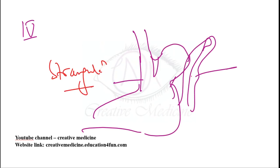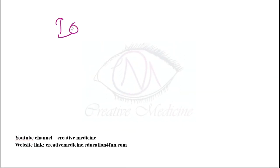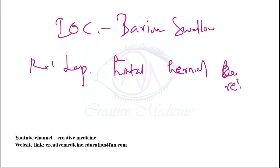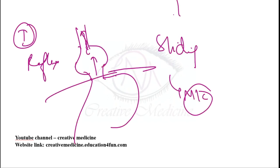Investigation of choice for diagnosis of hiatus hernia is barium swallow. Treatment is laparoscopic hiatal hernia repair done via the abdominal route. In sliding hernia, because the gastroesophageal junction is in the thorax, ulcers form in the lesser curvature of the stomach — these are called Cameron's ulcers.